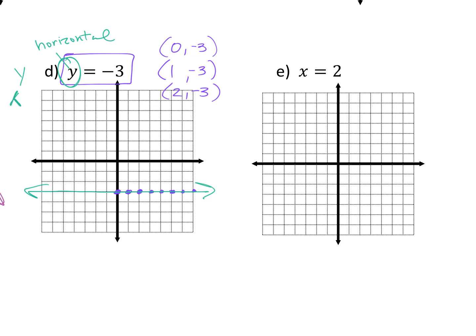So what do you think x equals is going to be? Vertical. If my x value has to be 2 — think (2, 0), (2, 1), (2, 2) — those points would make a vertical line right here. X equals will always be vertical. I always say an X looks like two V's — vertical — for your x. So x equals will always be a vertical line, y equals will always be horizontal.